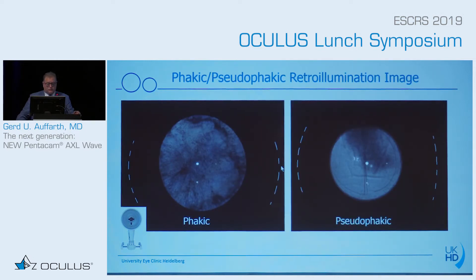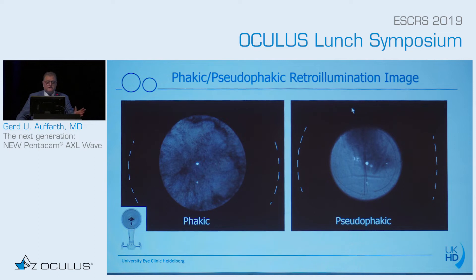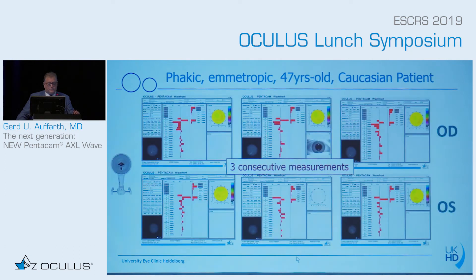Here are two examples of retroillumination photos. This is of a phakic lens — you can see the cataract and its structure. Here is the pseudophakic eye, showing the capsulotomy and folds in the capsule. We may also use it to quantify posterior capsule opacification in the long run, and also for assessing centration and rotational stability of lenses.